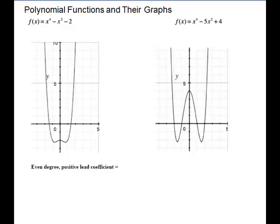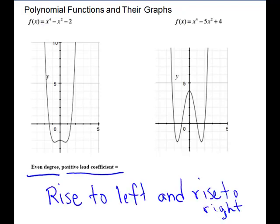Our next polynomial functions have degree four, so an exponent of four — these are even. Notice it looks like a w; in general it looks like a w. That's the even degree making it do that. They both have a positive leading coefficient of positive one, and that's what makes them stay in this direction. If they had a negative coefficient, they would turn upside down. Notice that these rise to the left and also to the right.